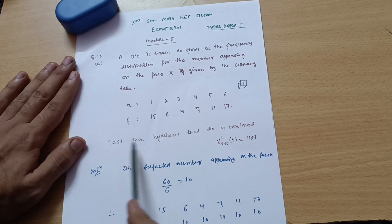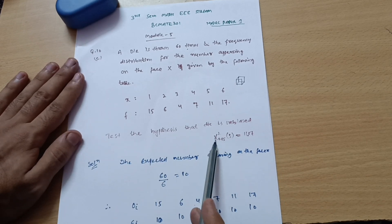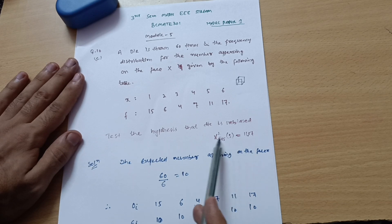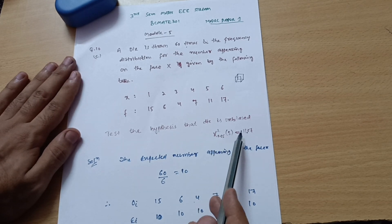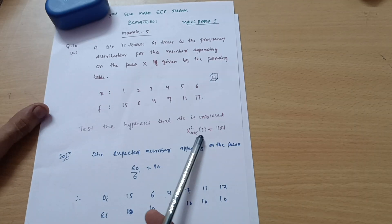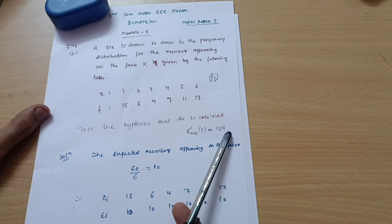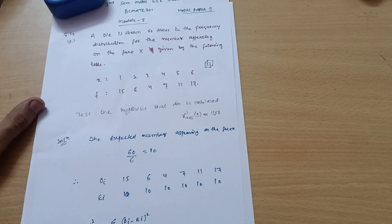What we have to do is test the hypothesis that the die is unbiased. The given value of chi-square is 11.07 at the 5% level of significance. If in the problem we are getting more than this value, then that hypothesis will be rejected. If the chi-square value is less than 11.07, in that particular case our hypothesis will be accepted. We will see later on in the question.